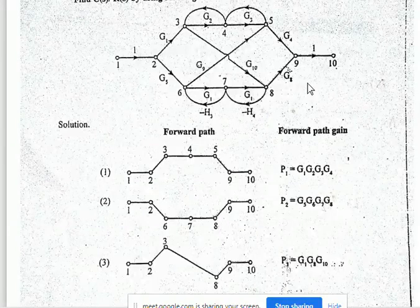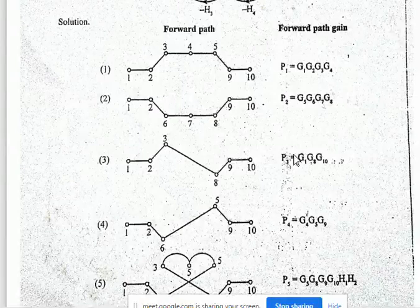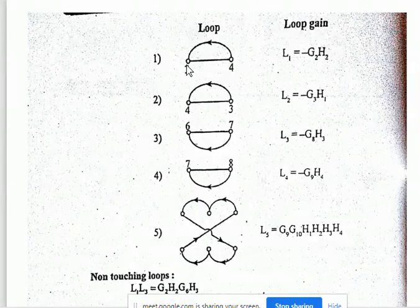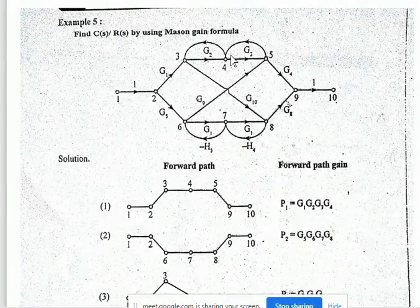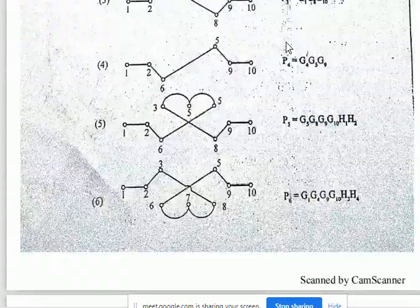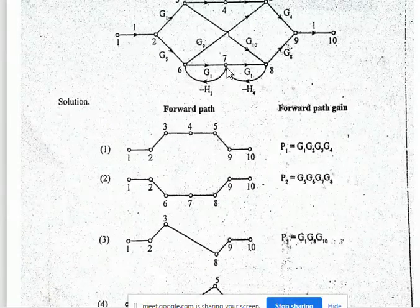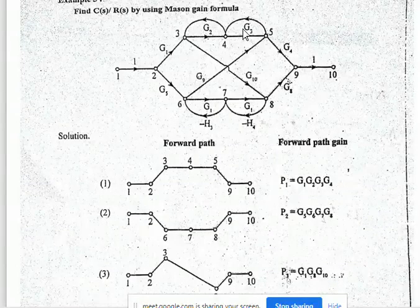The next step is to write the loops. The first loop L1 is 3 to 4 and 4 back to 3. The second loop L2 is 4 to 5 and 5 back to 4. Loop L3 is 6 to 7 and 7 back to 6. Loop L4 is 7 to 8 and 8 back to 7. These are four loops.